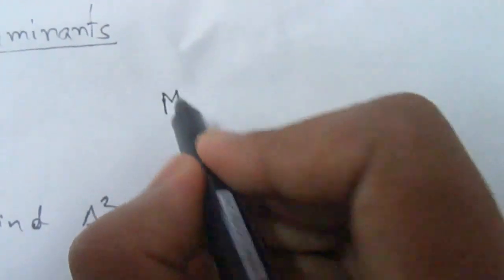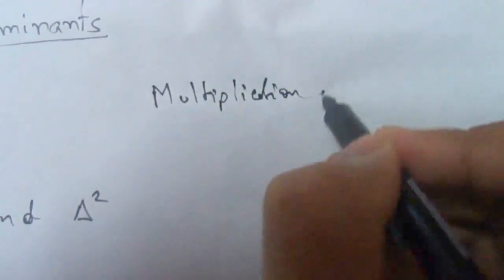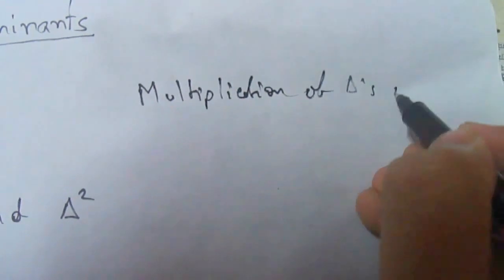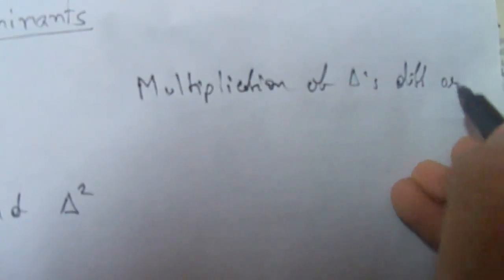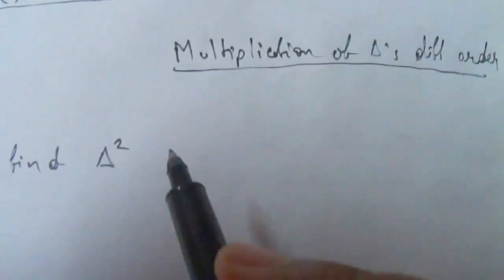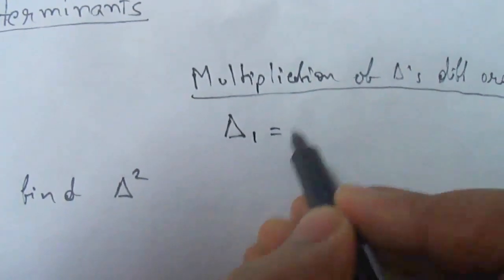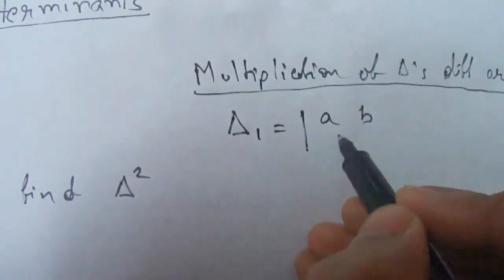Now we will see multiplication of determinants of different order. This is exactly same as multiplication with the same order. The question may be given like this. Del 1 is equal to a, b, c, d.